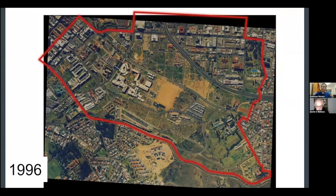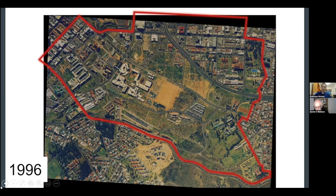By the 1990s, District 6 looked totally different. The landscape was dominated by the Cape Technicon — these buildings here — which was a whites-only university in the middle of the site, surrounded by barren land. In the early 2000s, Cape Technicon would become the Cape Peninsula University of Technology, or CPUT, which was the institution that I joined as a new academic in geomatics.